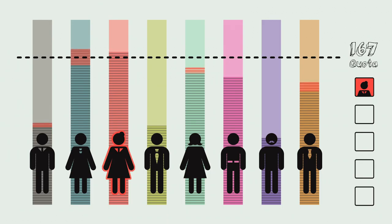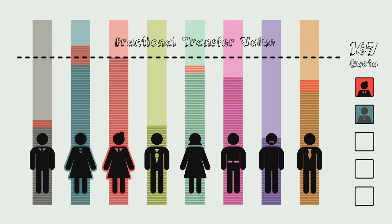The value of the surplus votes gained by an elected candidate is passed on to other candidates according to the preferences indicated on ballot papers by voters. The preferences from these votes are redistributed at a reduced value called a fractional transfer value. Then the new total of votes for each remaining candidate is calculated. These preference votes may be enough for more candidates to reach a quota.